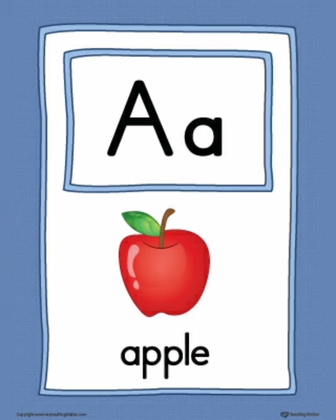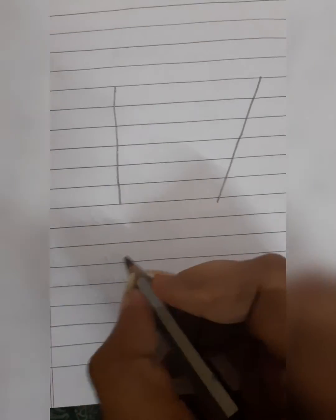First, we learn different types of lines. This is called a standing line. This is called a slanting line. And this is called a sleeping line.